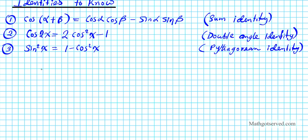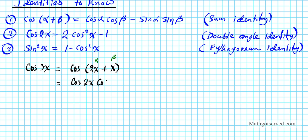Now let's go ahead and do the proof. We're going to start with cosine 3x. The goal is to show that cosine 3x equals 4 cosine to the third x minus 3 cosine x. Starting with cosine 3x, I can rewrite the argument as cosine(2x + x). Now I'm going to make use of the sum identity for cosine, where 2x is alpha and x is beta, and rewrite this as cosine 2x cosine x minus sine 2x sine x.